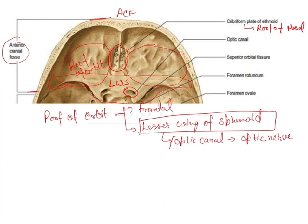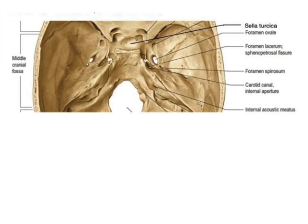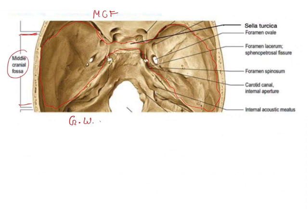The optic nerve passes through the optic canal present in the lesser wing of sphenoid — that is very important to remember. As we know, the greater wing is located as the floor of the middle cranial fossa. The greater wing of the sphenoid bone, which is present in the middle cranial fossa, is going to have three important openings which are asked in the exam.